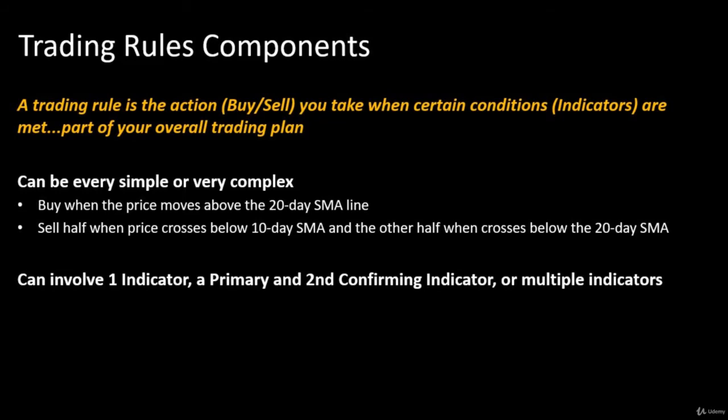These trading rules can be very simple or very complex. For example, we're going to buy when the price moves above the 20-day simple moving average line. That's an easy indicator to understand — a simple rule. Or it could be: sell half of my holdings when the price crosses below the 10-day simple moving average, and the other half when it crosses below the 20-day simple moving average. That adds more complexity.